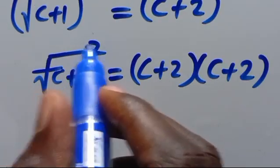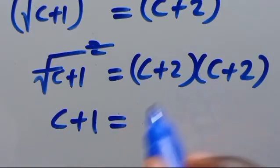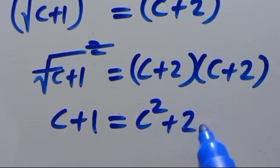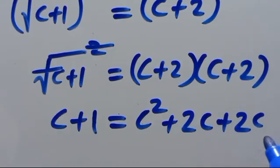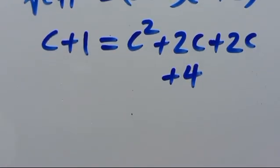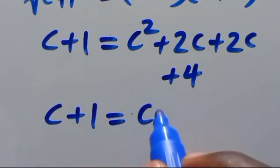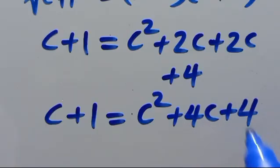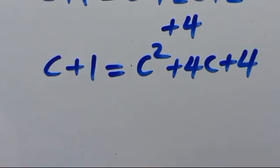Expanding the right side: c times c gives c², c times 2 gives 2c, 2 times c gives another 2c, then plus 4. So we have c + 1 equals c² + 4c + 4.